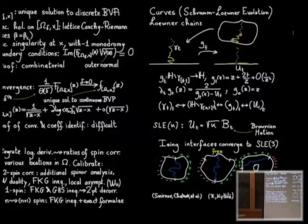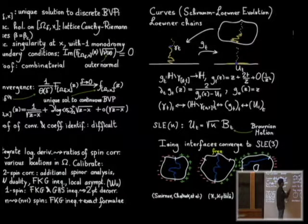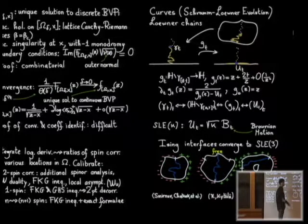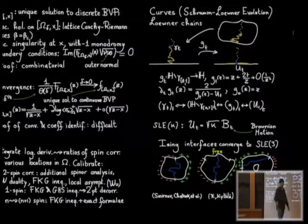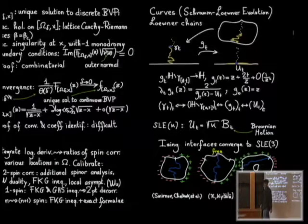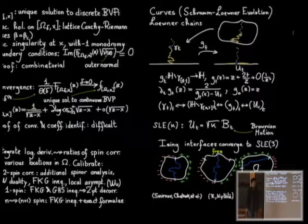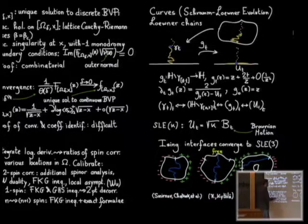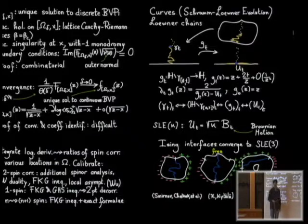For any reasonable type of boundary conditions involving plus, minus, and free boundary conditions, it can be proven that the interfaces converge to continuous interfaces. Each of the curves arising in the model can be described in terms of its Radon-Nikodym derivative with respect to a reference SLE curve. All these curves are absolutely continuous with respect to SLE, and you can write explicitly what the Radon-Nikodym derivatives are — you can do it one curve at a time or jointly.